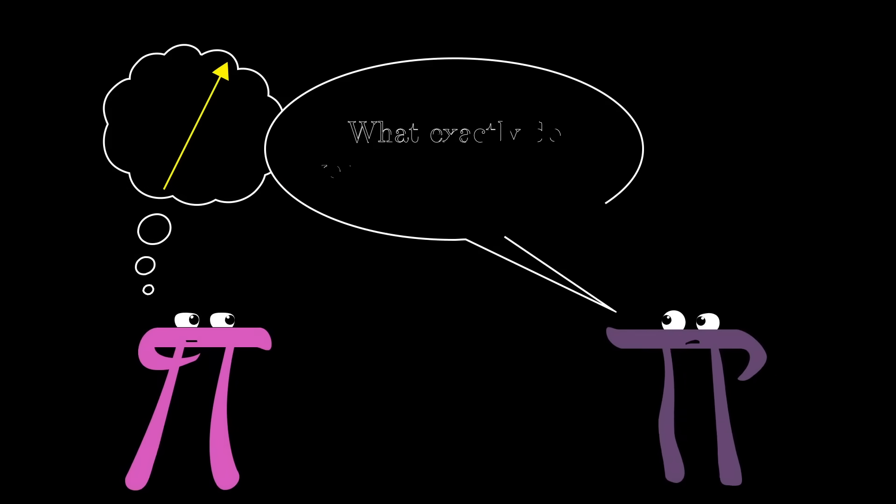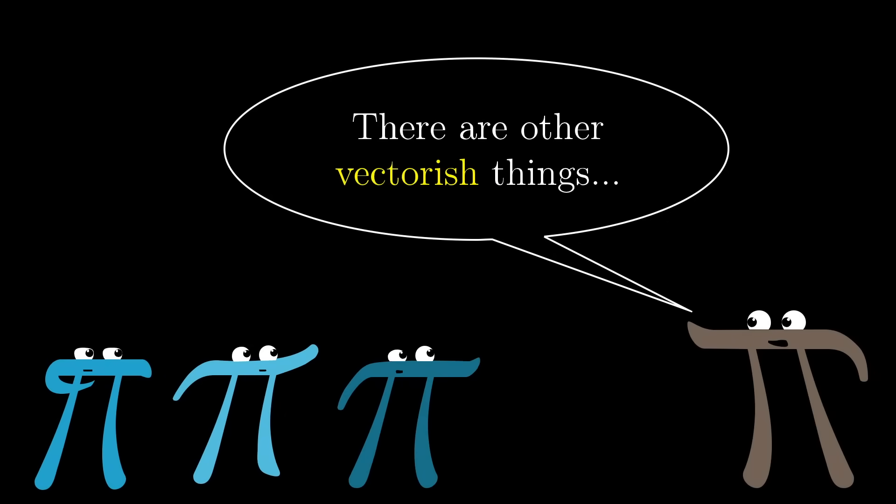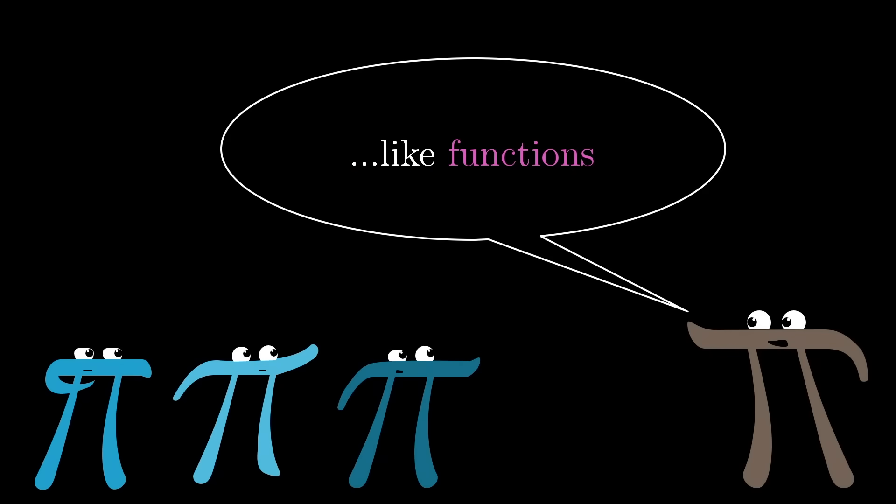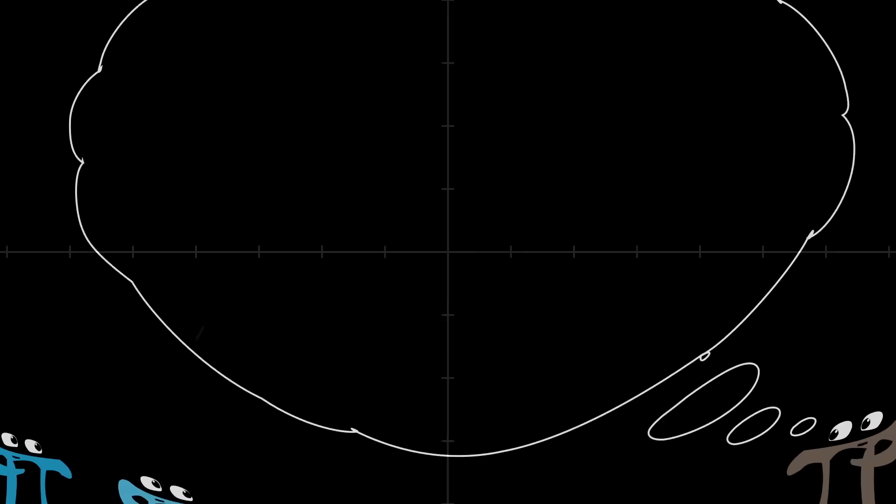But if vectors are not fundamentally lists of real numbers, and if their underlying essence is something more spatial, that just begs the question of what mathematicians mean when they use a word like space or spatial. To build up to where this is going, I'd actually like to spend the bulk of this video talking about something which is neither an arrow nor a list of numbers, but also has vector-ish qualities, functions.